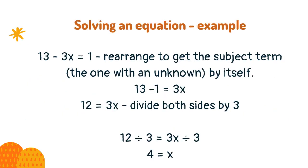Example: 13 minus 3x equals 1. First, rearrange to get the subject term — this is the one with an unknown by itself. 13 minus 1 equals 3x. 12 equals 3x. Now you must divide both sides by 3.